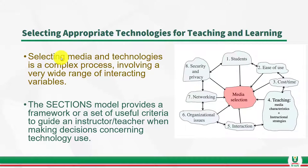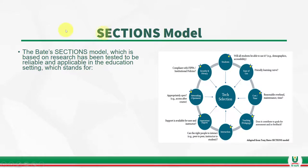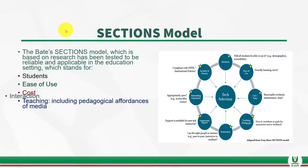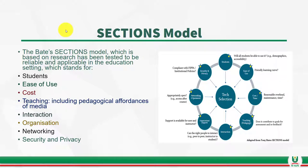The SECTIONS model by Professor Tony Bates provides a framework that can guide you when making decisions concerning technology use. This model is a combination of eight variables that should be considered when selecting technologies for teaching and learning: S stands for Students, E for Ease of use, C for Cost, T for Teaching, I for Interaction, O for Organization, N for Networking, and S for Security and privacy.